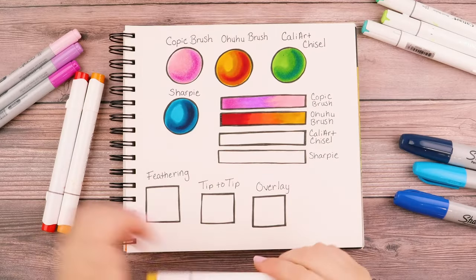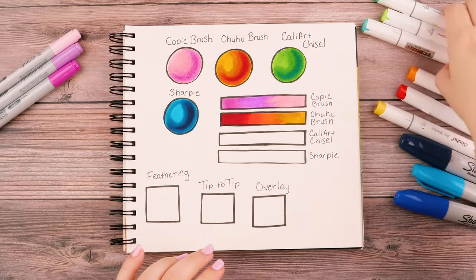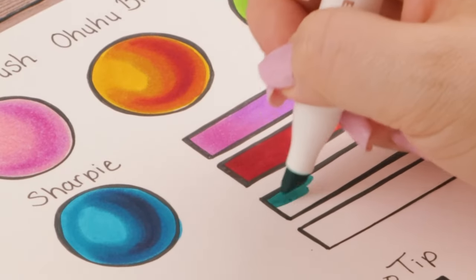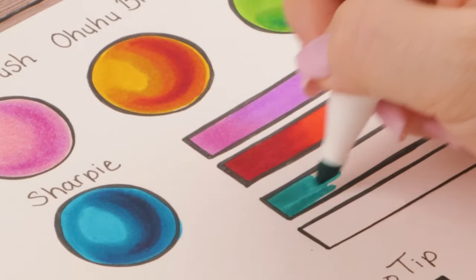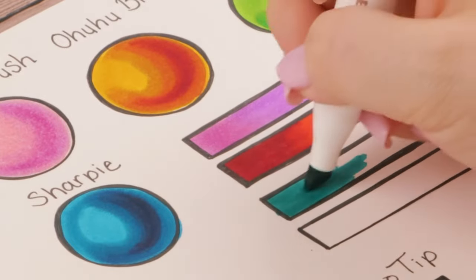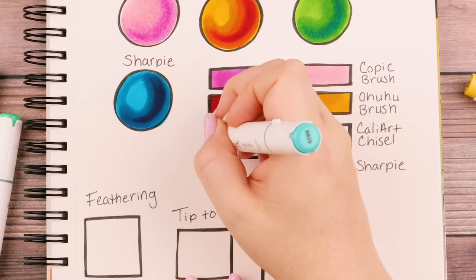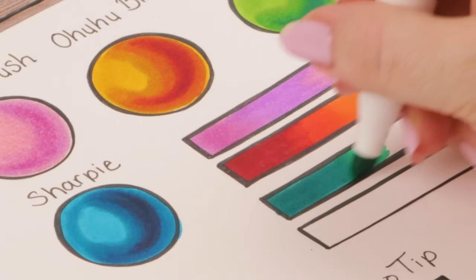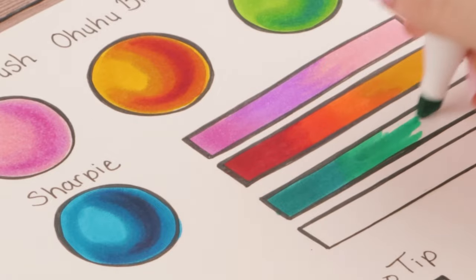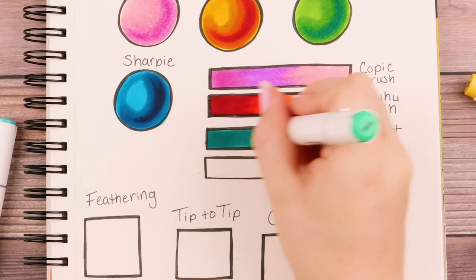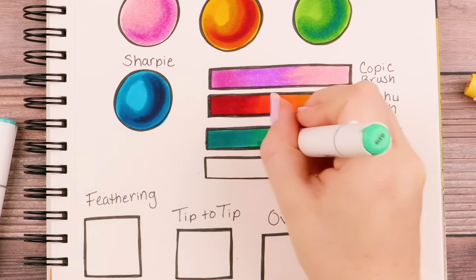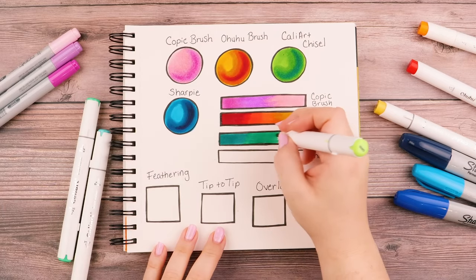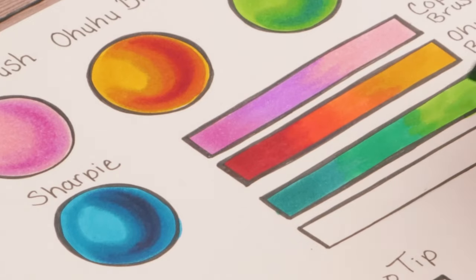So that was the Ohoho brush. Now we're going to try out the Caliart chisel starting with this kind of blue, but maybe like a turquoise or a teal. I don't know, but it's really pretty. So I'm just dragging it to the side, trying to flick it. It's kind of harder to flick with the chisel nib, but then going into my green and pulling out. This is going to be a really pretty transition. I really like these colors going together from that kind of sea blue to green, and then a really light green at the end. And that is that.